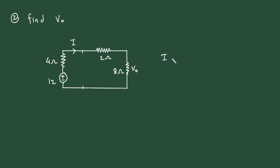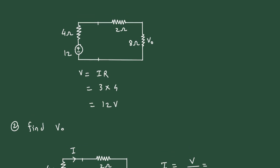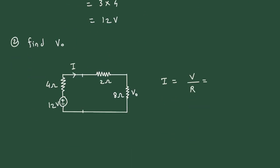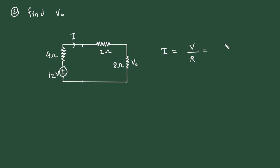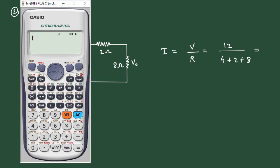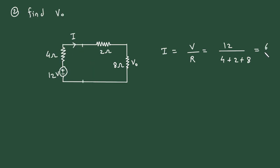First of all we have to find current flowing through this circuit. So current flowing through this circuit will be I is equal to V upon R. The value of voltage is 12 volt. Now it will be 12 divided by resistance value is 4 plus 2 plus 8. So here we can write it is 6 by 7, 6 by 7 ampere.